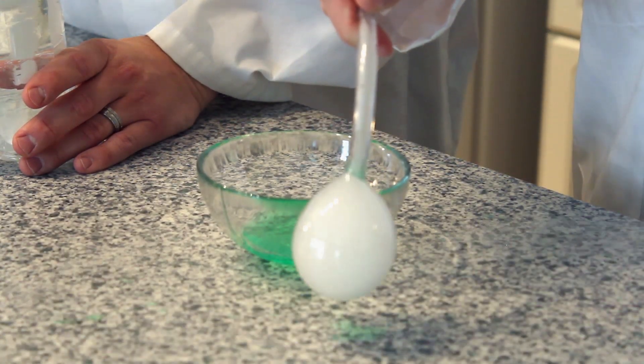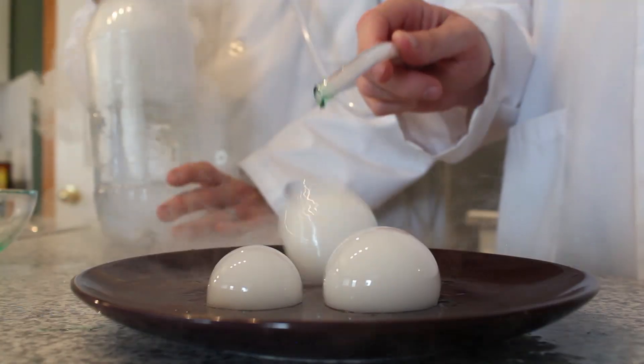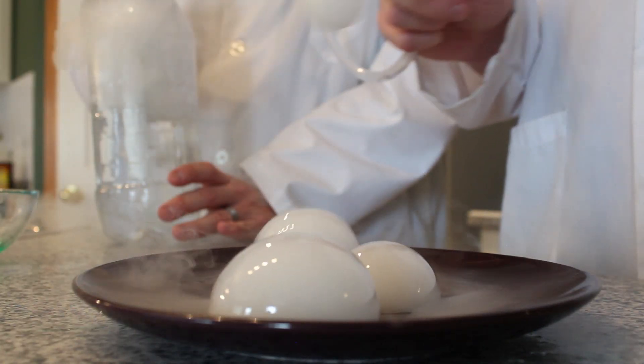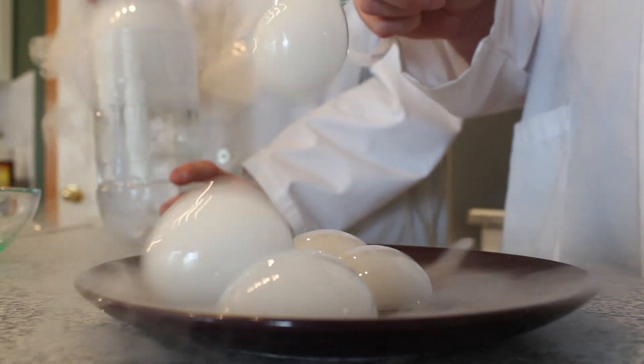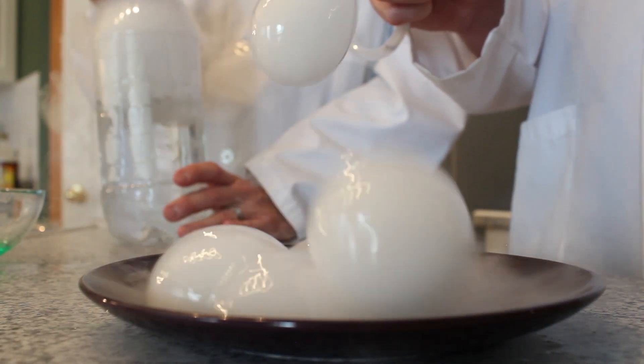The bubbles will pop if they come in contact with dirt or oils, so to get them to land without popping, rub a little bit of dish soap over the surface of your plate. This creates an oil and dirt free surface, which is perfect for your bubbles to land on.